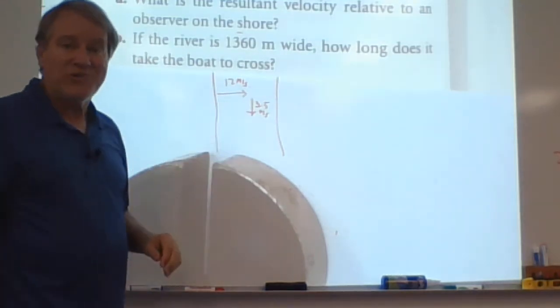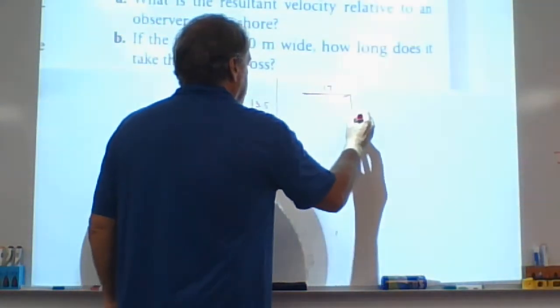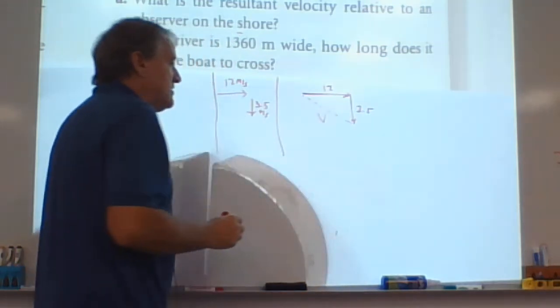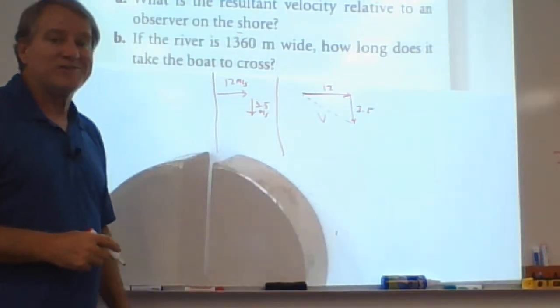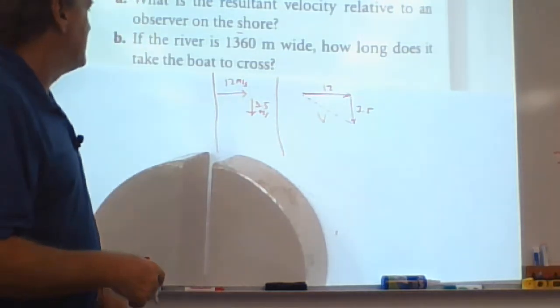Once again, we got us a right triangle. So the way I'd solve it is this is 12, this is 3.5. And it's asking, what is the resultant velocity here? I think it's just easy to square and square root it, square them, add it together, square root it to get the resultant velocity for A.